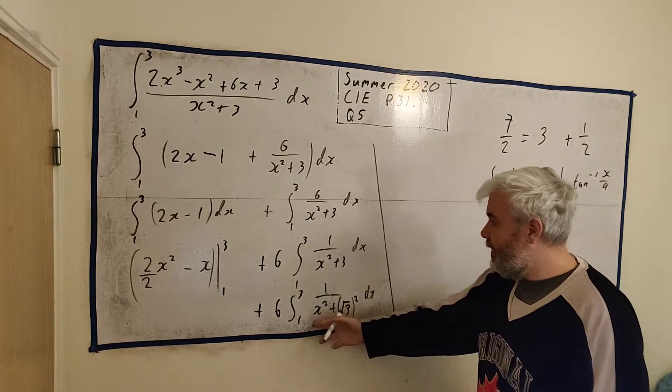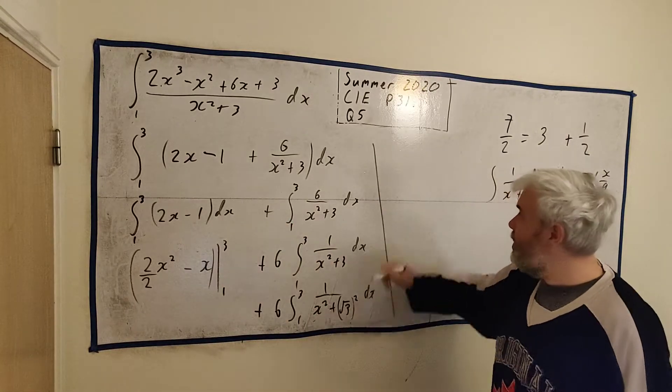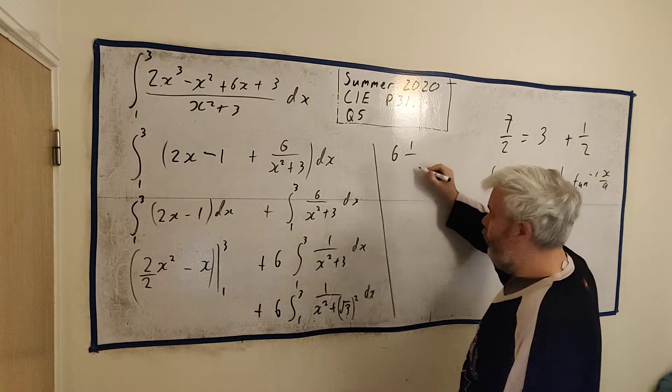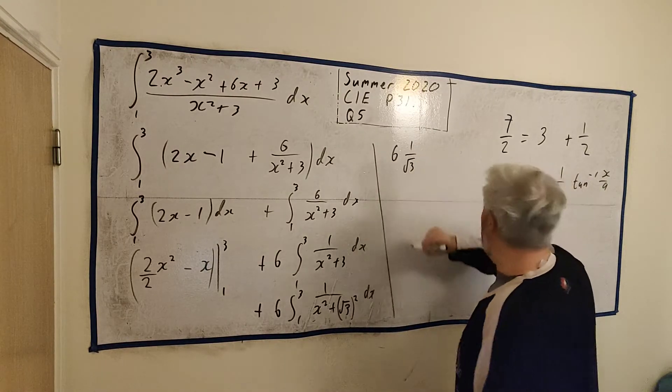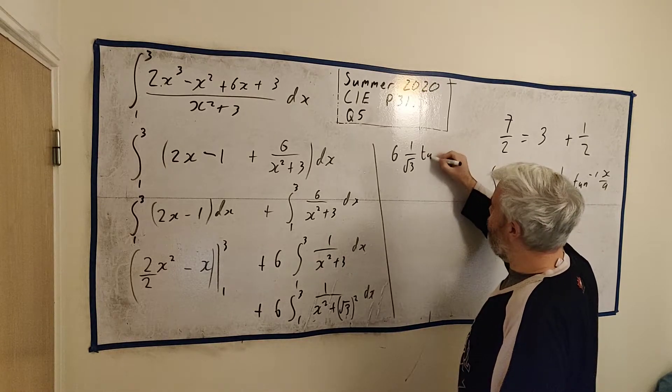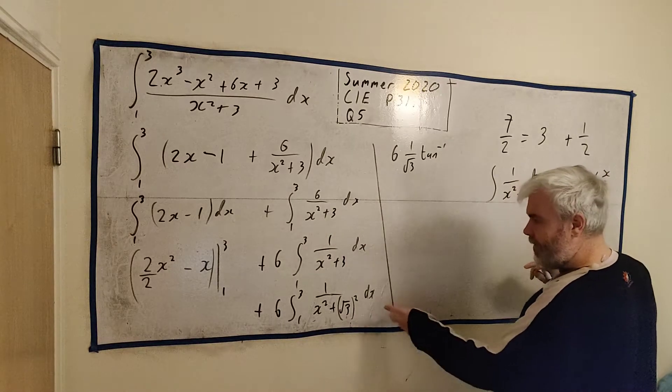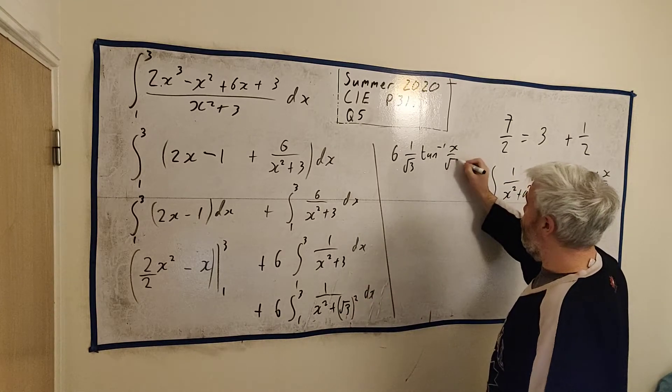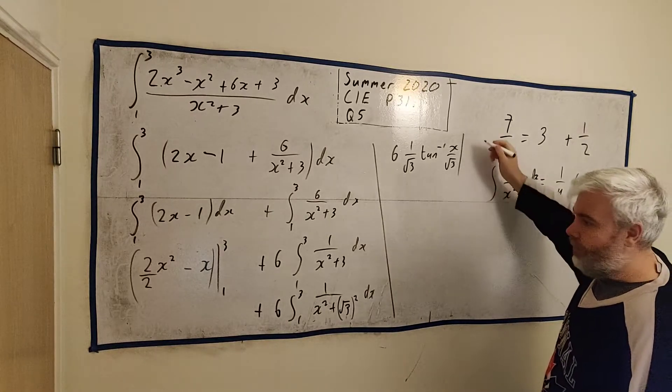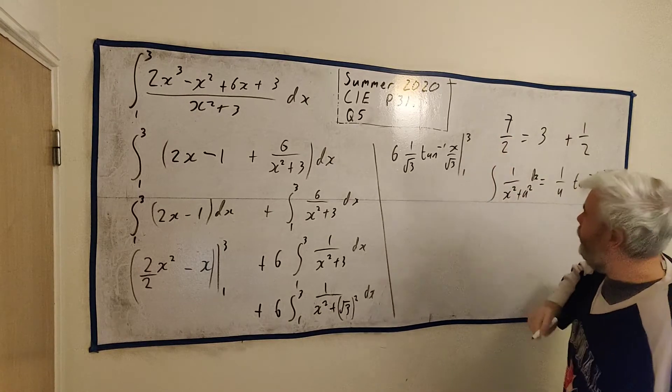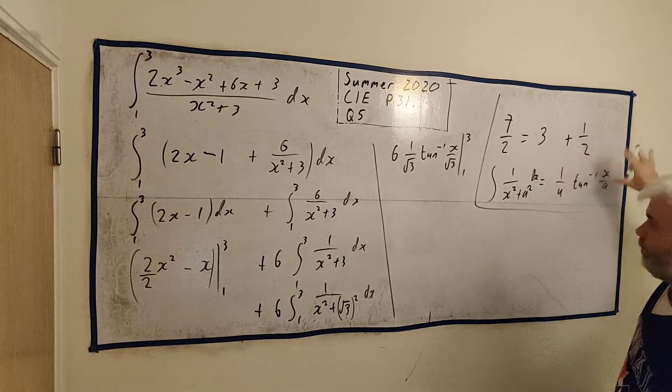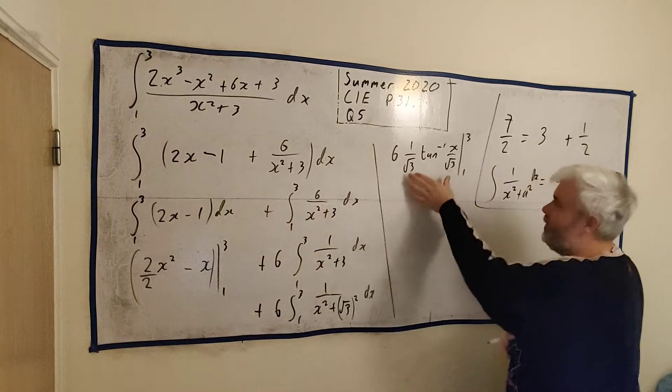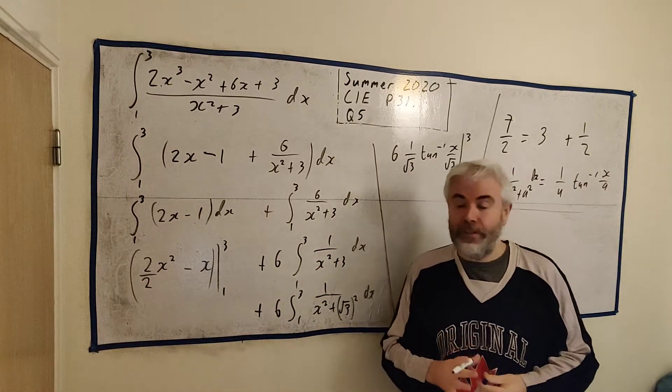Now we have a squared. So now we just copy and paste from the rule we're given. The answer to this part will be just 6 multiplied by 1 over a, 1 over square root of 3, the inverse tangent of x over a. a is square root of 3. And all this is evaluated between 3 and 1. So that is the integral of all this. This is the integral of the first part, the integral of the second part. We just need to put in the numbers now.